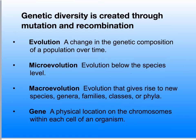Genetic diversity is created through mutation and recombination of genes. Earth's biodiversity is a product of evolution, which can be defined as a change in the genetic composition of a population over time. Evolution can occur at many levels. Evolution below the species level — such as the evolution of different varieties of apples and potatoes — we call microevolution.